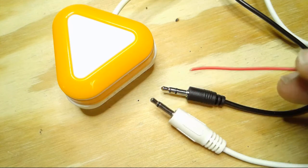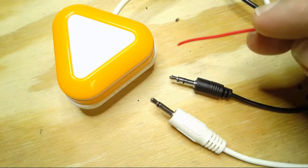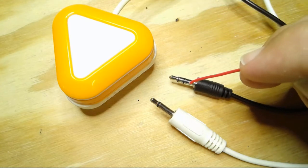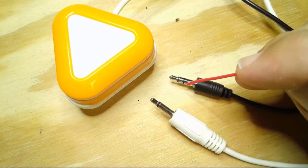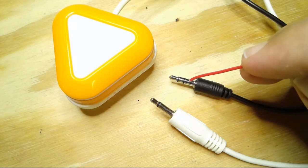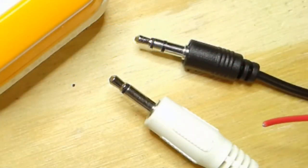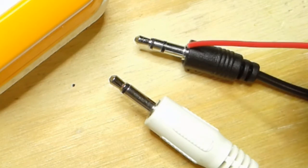Over here we have a standard aux cable, the kind you might find when you're hooking up your speakers or your headphones, especially like older headphones. Newer headphones will actually have another ring in it here. But this is the most common kind of stereo aux cord that you're going to find.